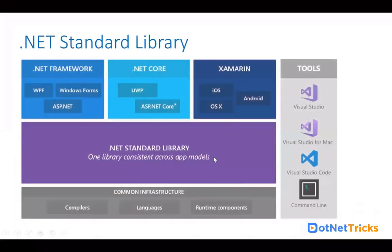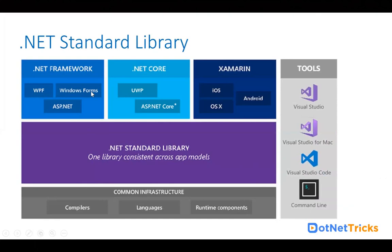We have three extensions of .NET: .NET Framework 4.5, .NET Core 2.1, and Xamarin. The requirement is how we can share code across these three implementations. For code sharing, we have the .NET Standard Library. Using the .NET Standard Library, we can share code among all three versions or implementations of .NET. Just create a .NET Standard Library and you can use it with a Xamarin project, a .NET Core project, and a .NET Framework project.